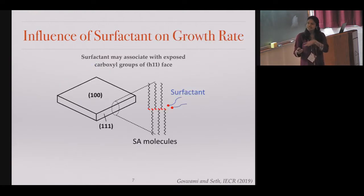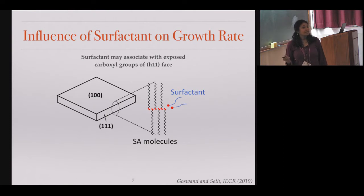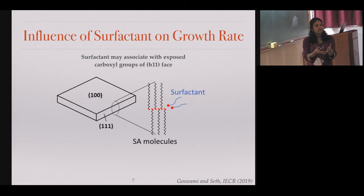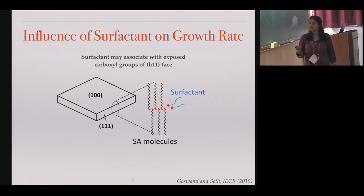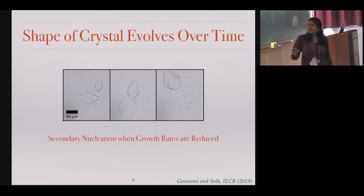More details are in the paper, but what is important is that the surfactant has these hydrophilic ends, and stearic acid crystals from the edges have these carboxylic groups that are exposed. These two polar entities should attract each other, and that might explain why this change in growth occurs.